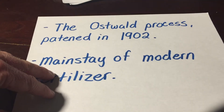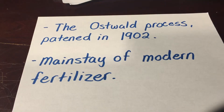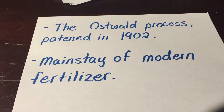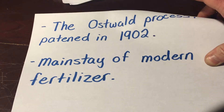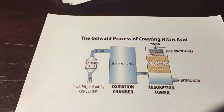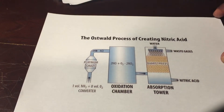Then the Ostwald process, a spin-off of the Haber process, was patented in 1902. It uses the ammonia made in the Haber process to create fertilizers and is still the mainstay of fertilizer production today. Here's a look at how it's converted into nitric acid, which is then used to create fertilizer.